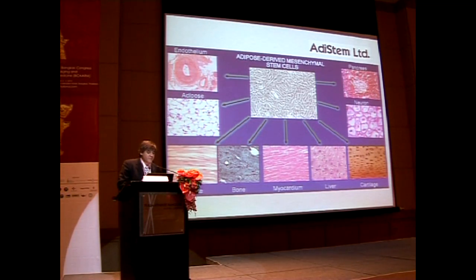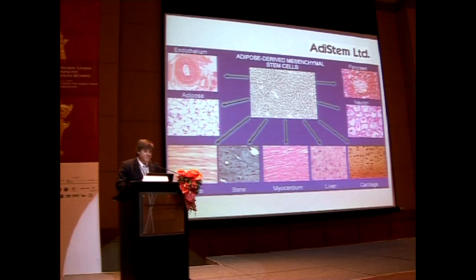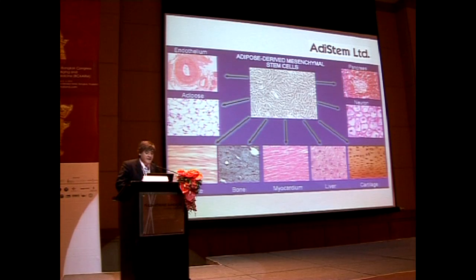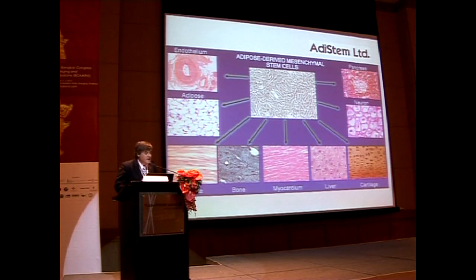How did they prove that these cells were stem cells from the adipose tissue? Well, they can turn them in culture into pancreatic cells, into neurons, cartilage, liver, myocardium, bone, muscle, adipose tissue itself, and endothelium.